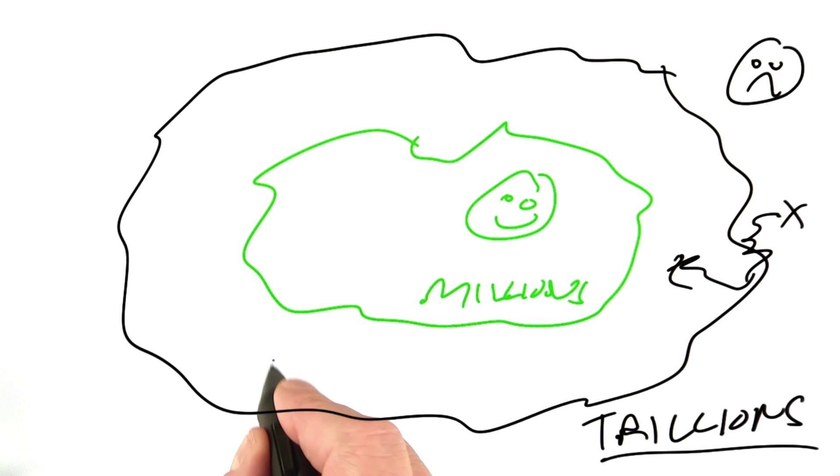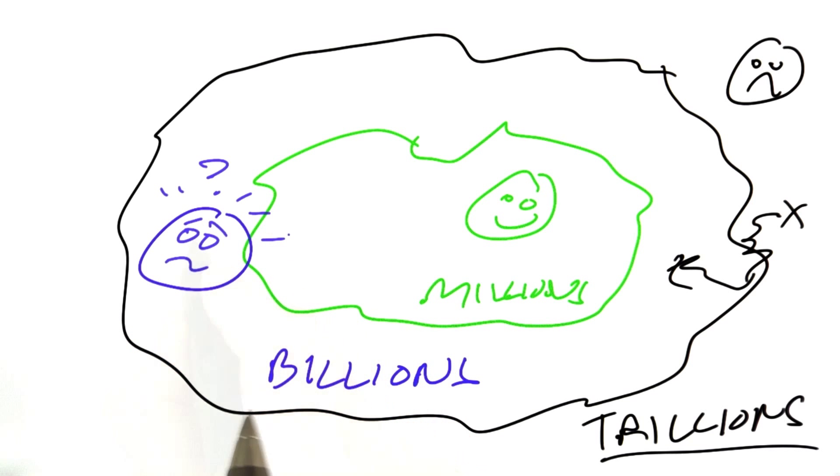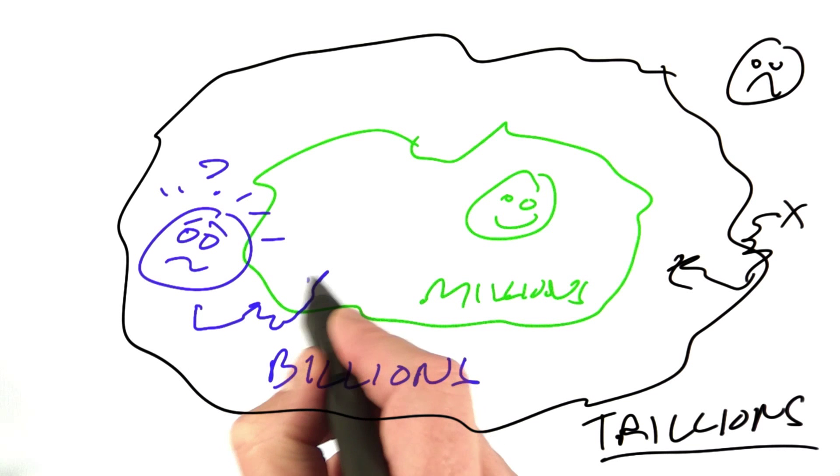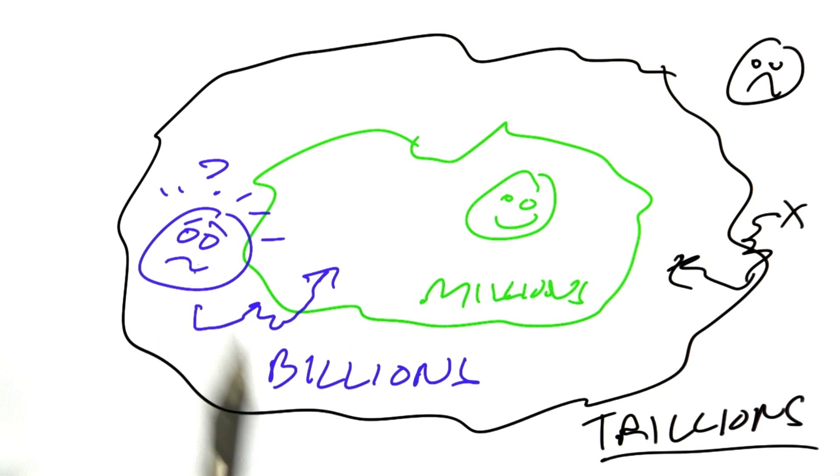In the middle here, where we need billions of instructions to complete our computation, then we're not quite sure. Maybe we're happy here and we can stay in this domain. Maybe we want to find our path through the wilderness back into the happy valley. Depends on the problem.